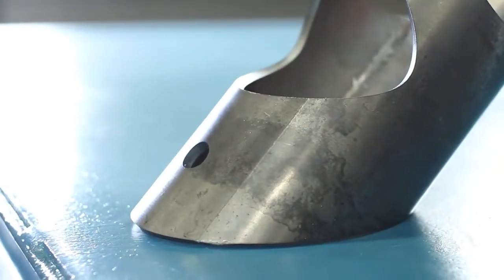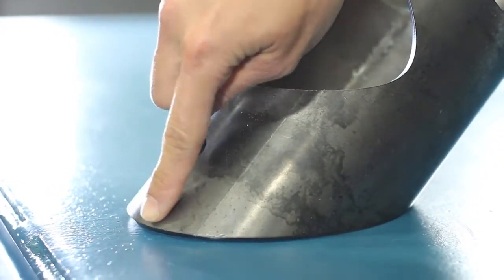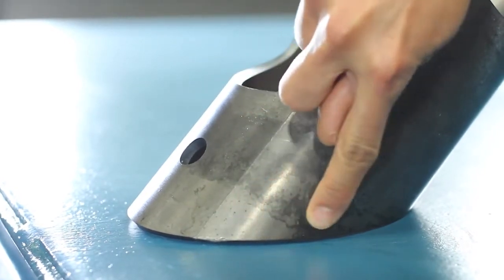When laid flat, the normal to surface part's bevel can be seen again as seen by the gap between the edge of the part and the table.